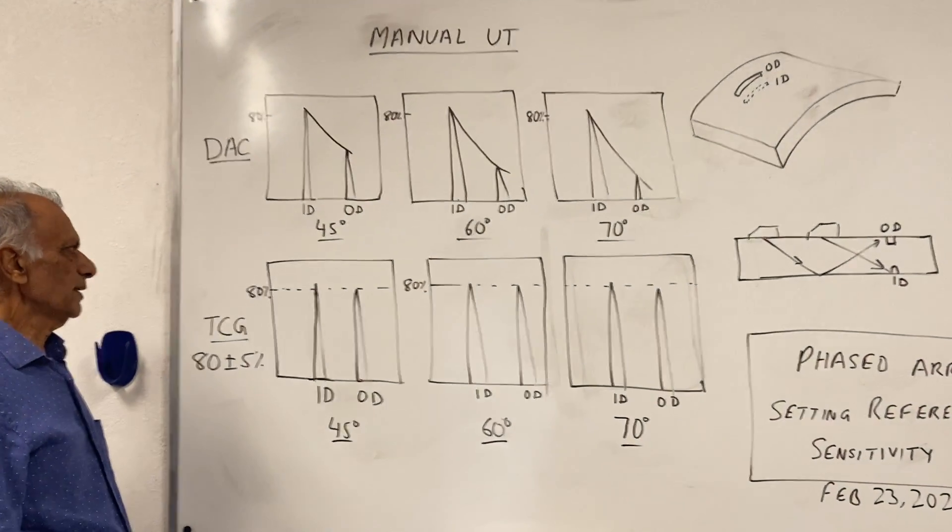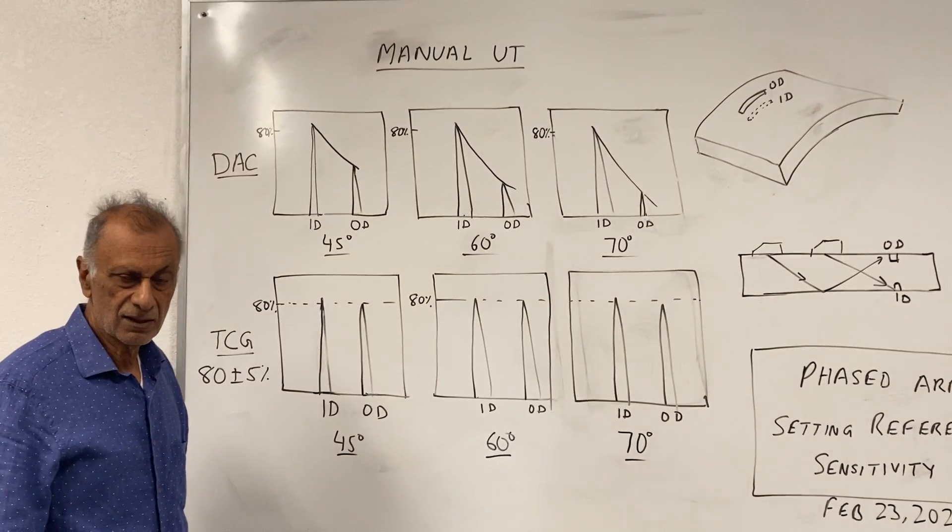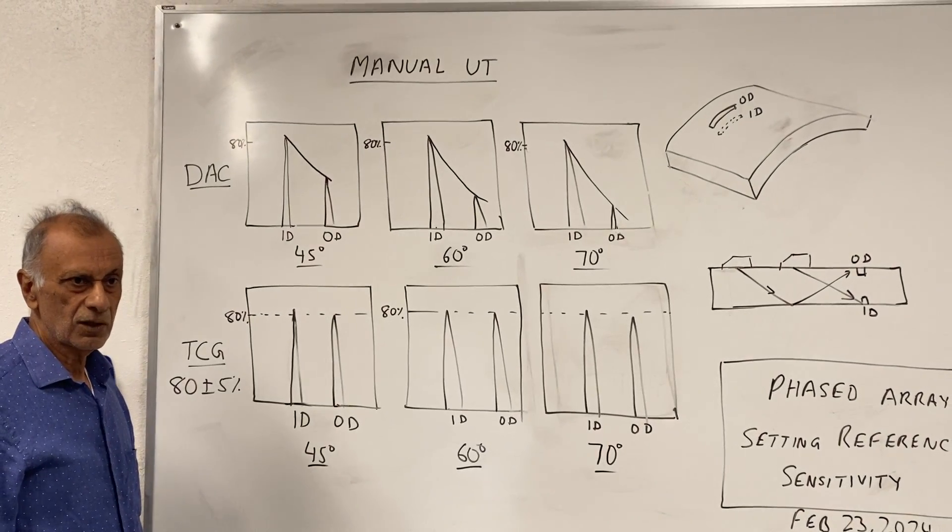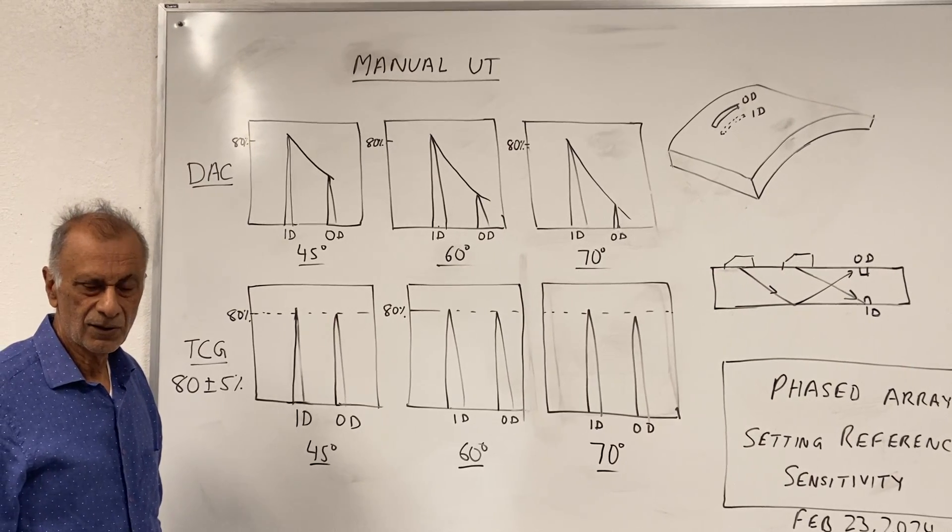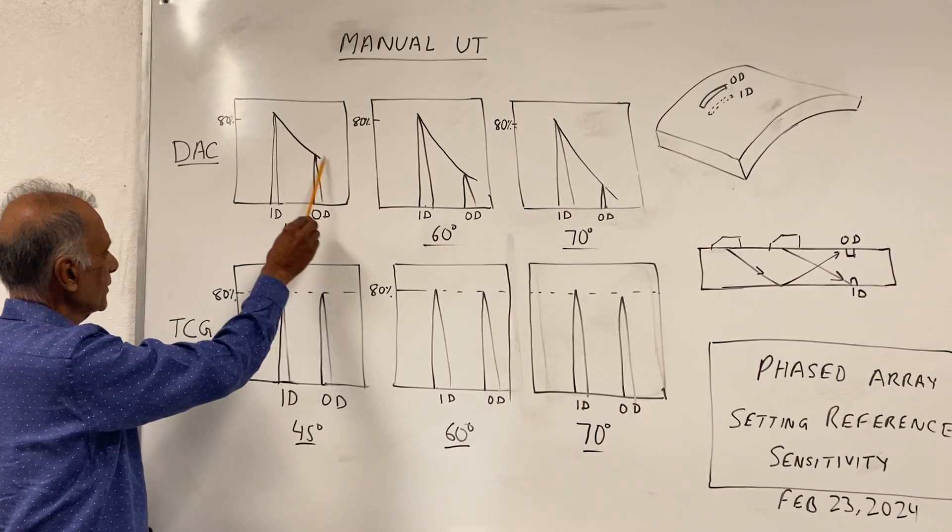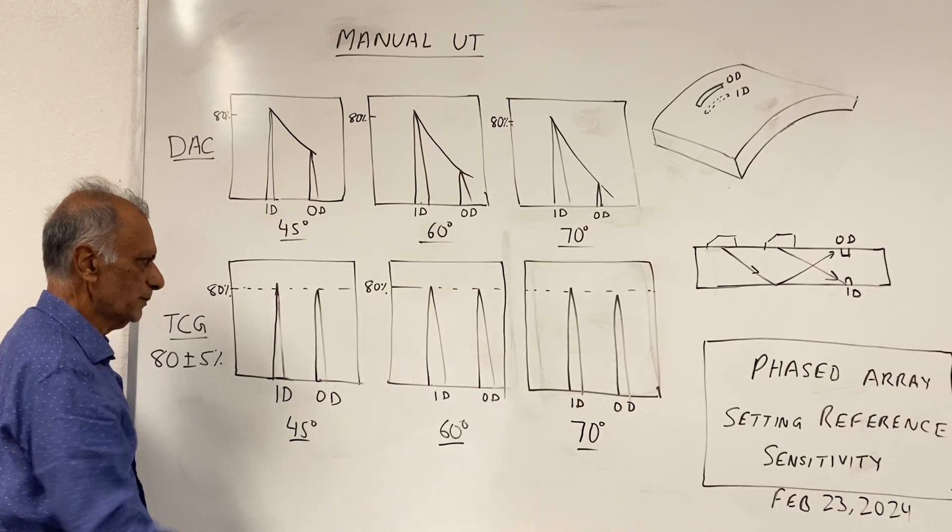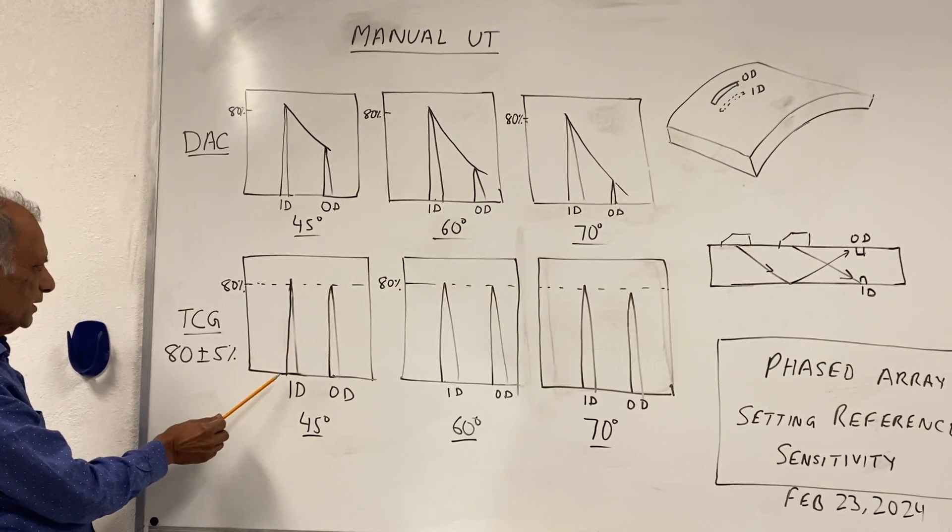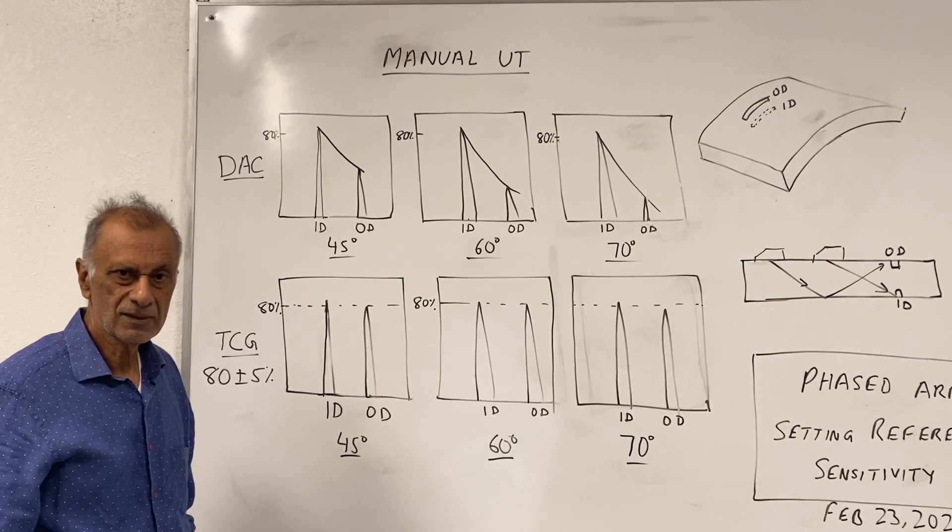The next step is you can actually do the inspection just using the DAC reference curve, which is also called the reference level for manual UT or conventional UT, or flip it to what is called time corrected gain or TCG. And what TCG does is it basically brings this line to 80%, which is right here, and it pulls the OD signal up so it's close to 80%.